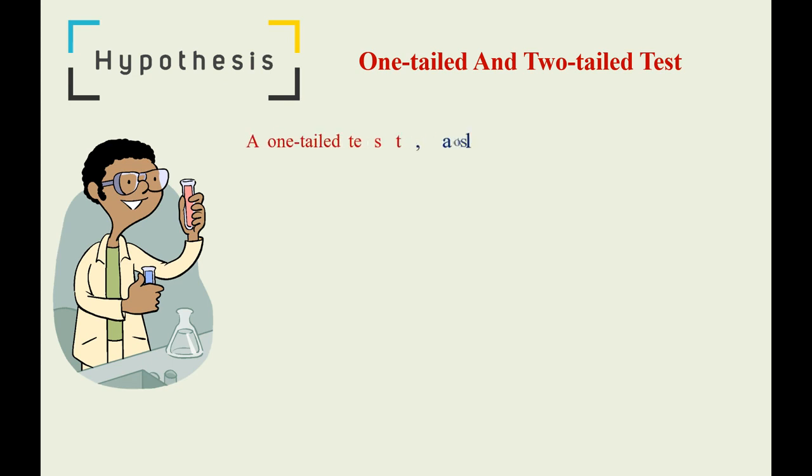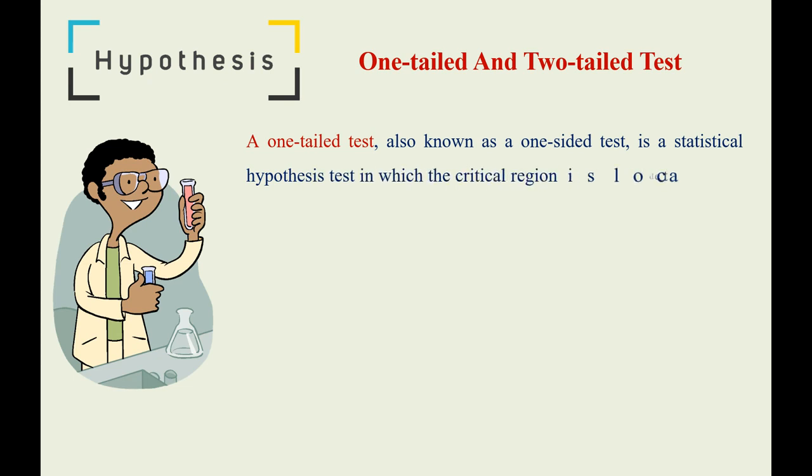A one-tailed test, also known as a one-sided test, is a statistical hypothesis test in which the critical region is located entirely in one tail of the distribution curve.